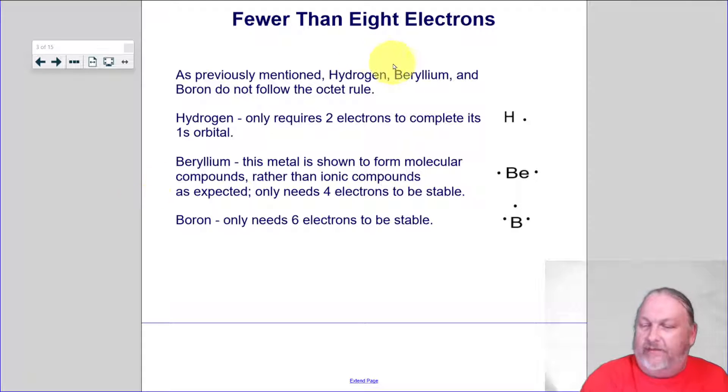So earlier I gave you three different atoms that we know don't follow the octet rule: Hydrogen, beryllium, and boron. Hydrogen doesn't because it only needs two electrons to complete its 1s orbital. That's all it's got available.